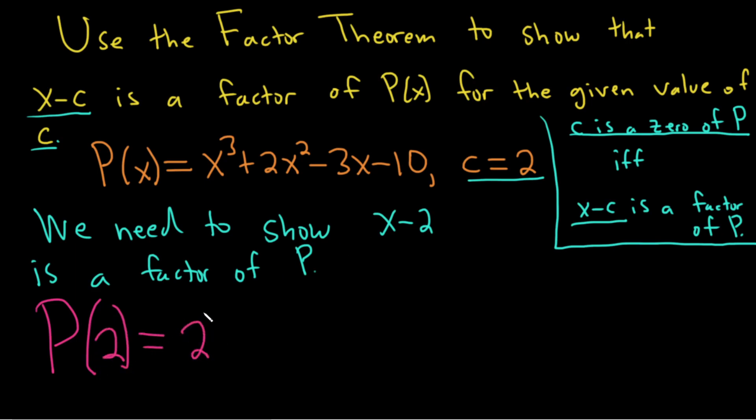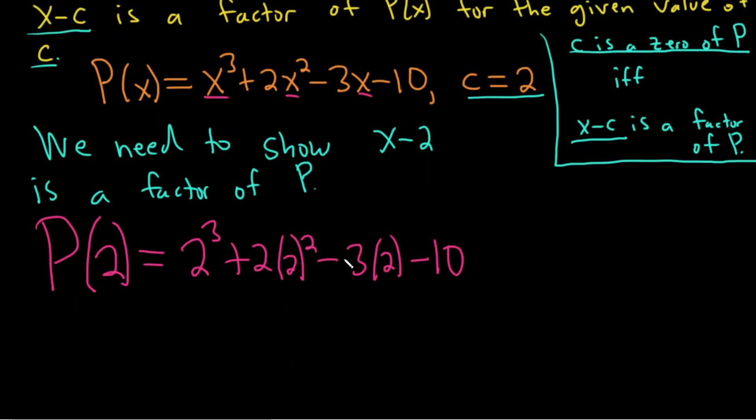So P of 2 is 2 cubed plus 2 times 2 squared minus 3 times 2 minus 10. Just replace each x with 2. And then 2 cubed gives us 8, and this is also plus 8 minus 6 minus 10. So this is 16 minus 16 equals 0.